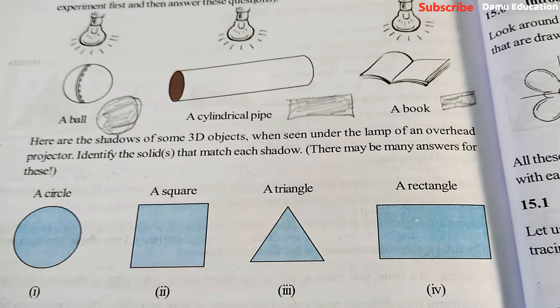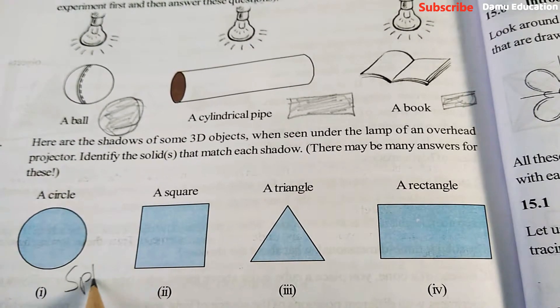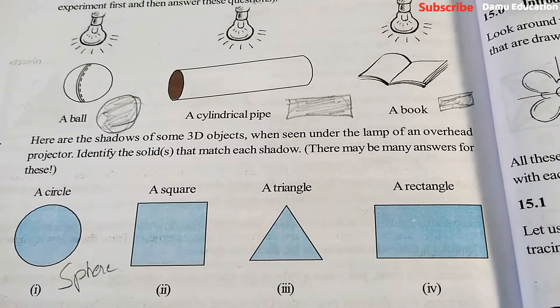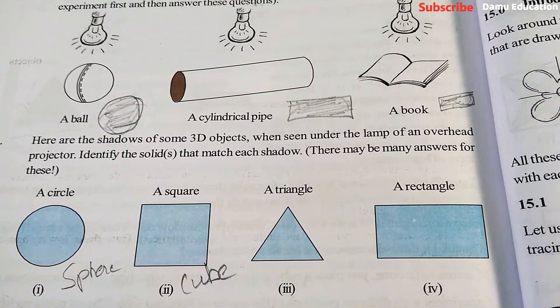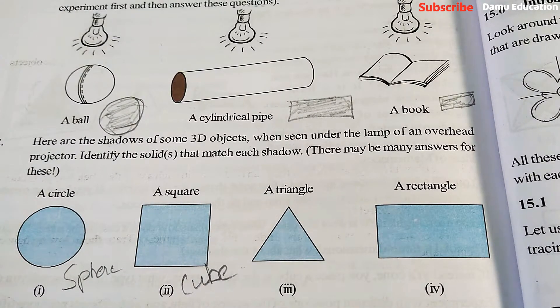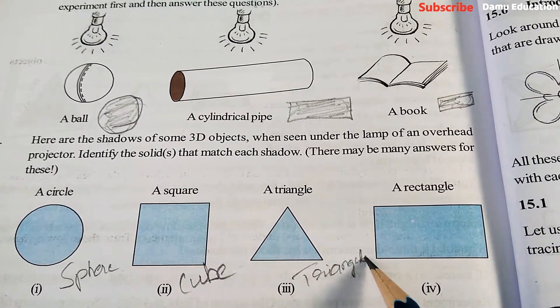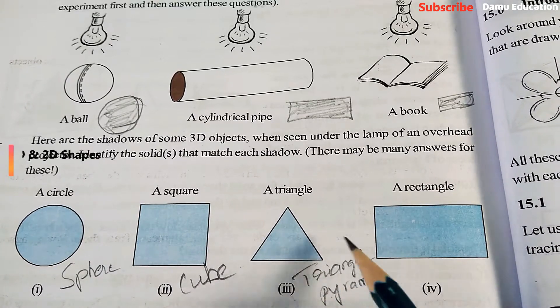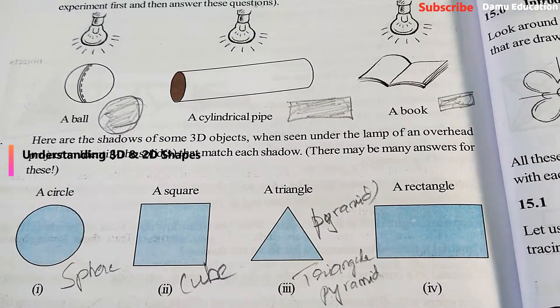If you take marbles or any sphere-shaped ball, the sphere will cast a circle shadow. Square means it will definitely be a cube or dice. Triangle means triangular pyramid or simply pyramid.